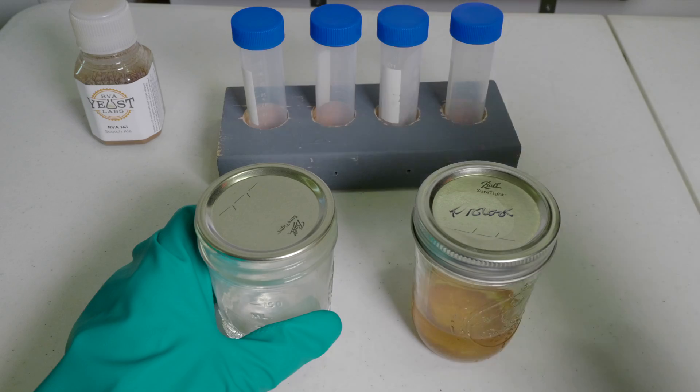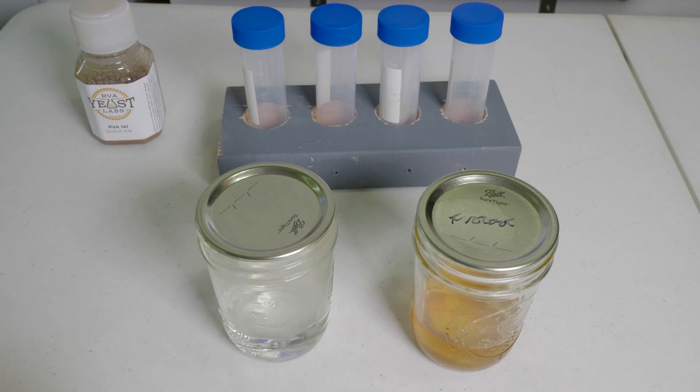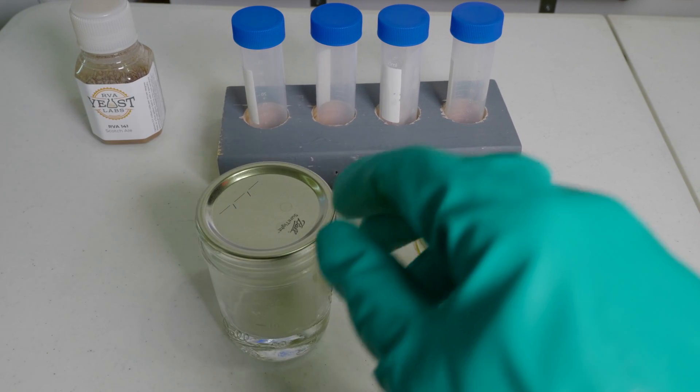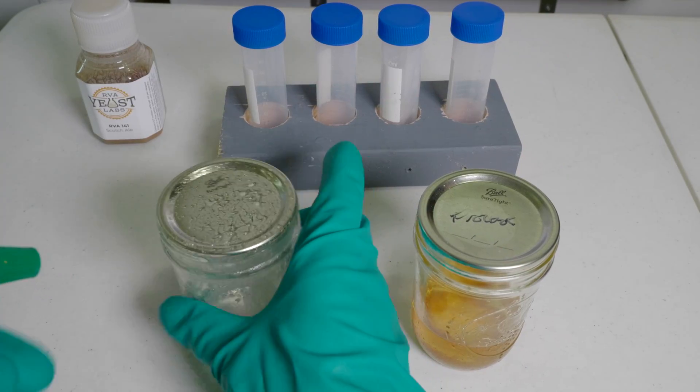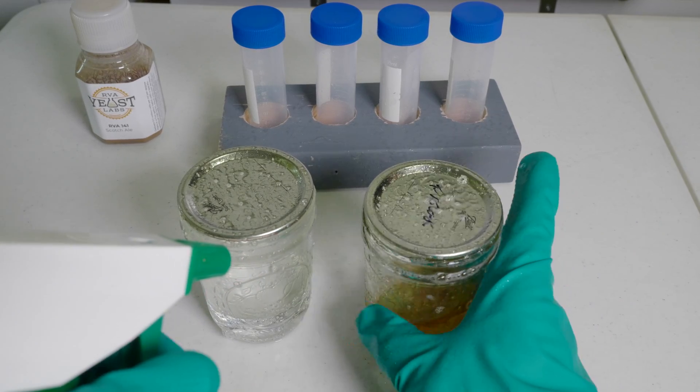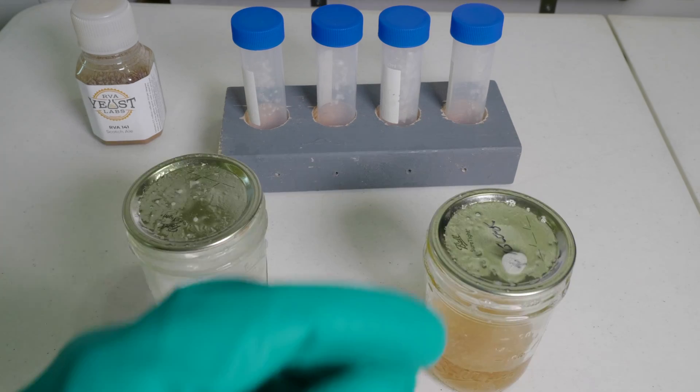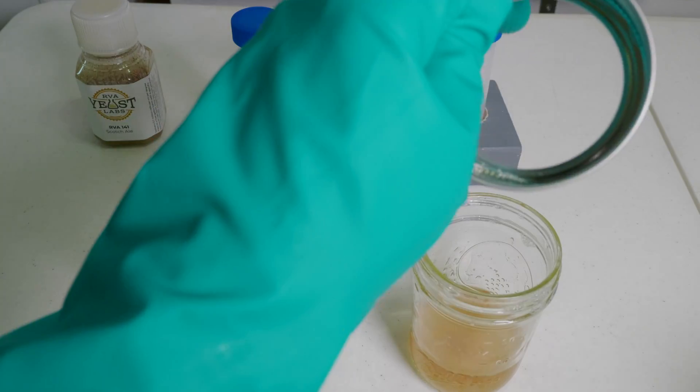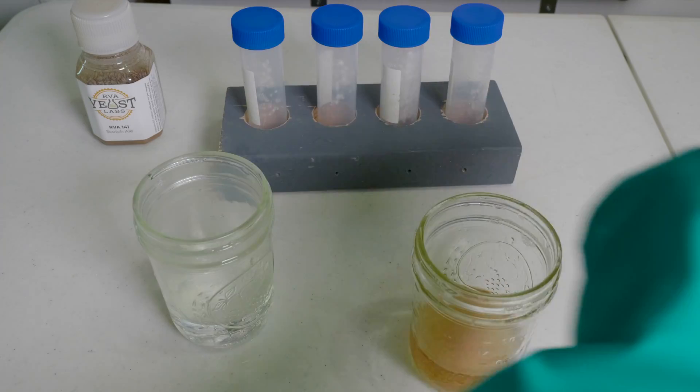I like to sanitize the edges of the mason jars since we'll be pouring out of them. Every little bit helps. Spray that down and let it sit a little bit. When you touch the ring to the lid, try not to touch it where you're going to pour.